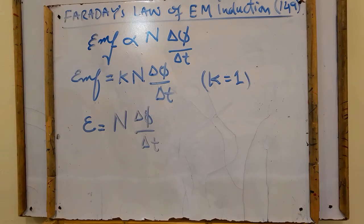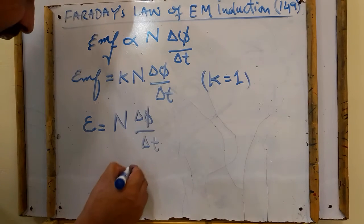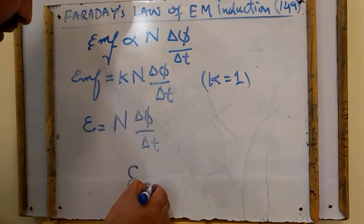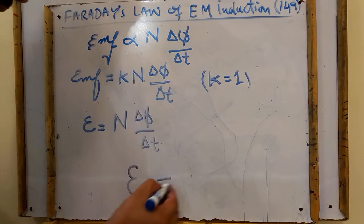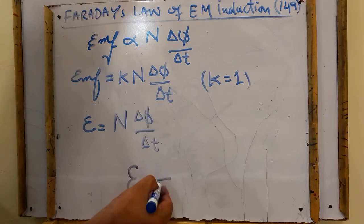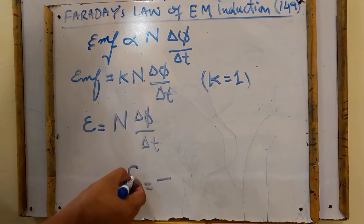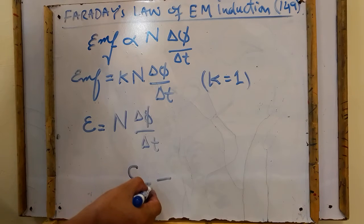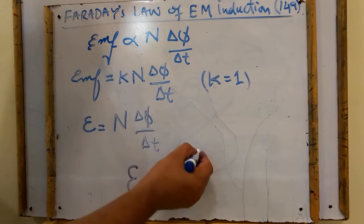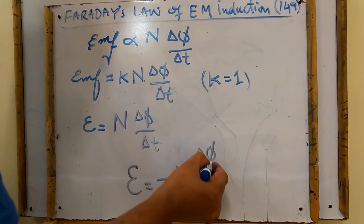An additional law which is called Lenz's law is normally written along with Michael Faraday's law in the form of a negative sign in almost all of the books. This negative shows the direction of induced current. We will explain this negative sign in next lecture.